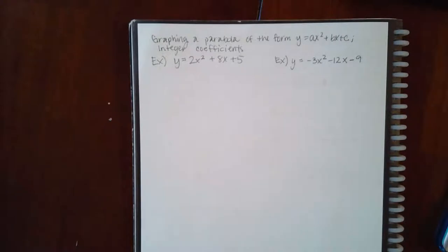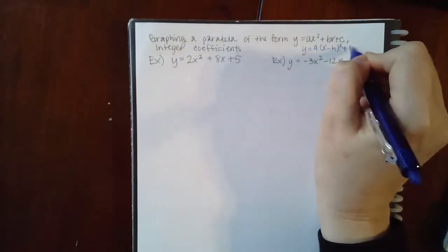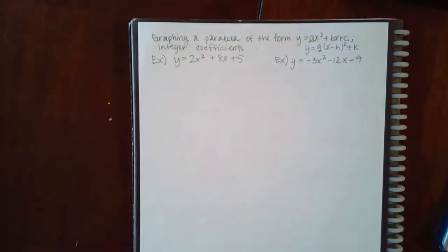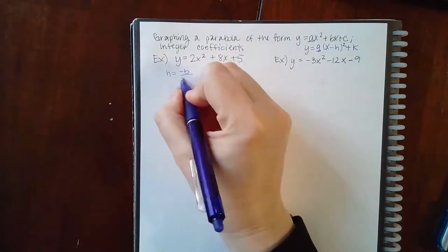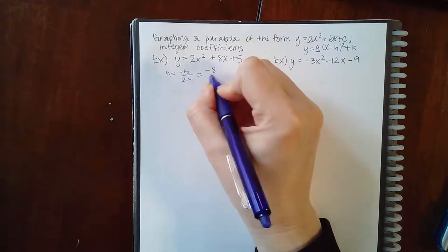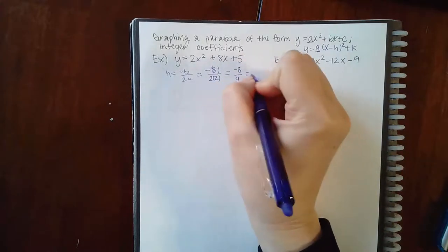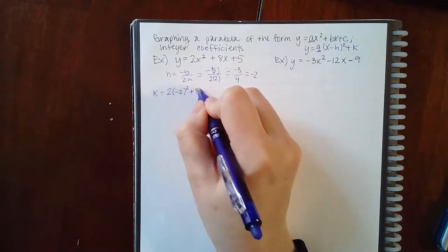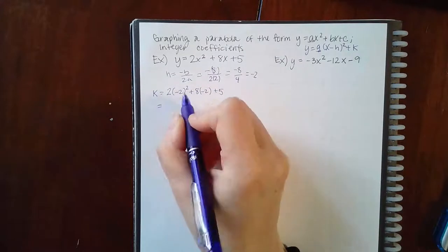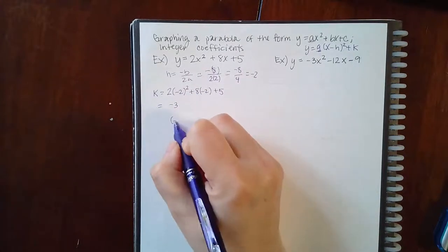For a problem with a = 2, graphing a parabola in the form 2x² + 8x + 5, find h = -b/2a = -8/(2·2) = -8/4 = -2. For k, plug -2 into the function: 2(4) + 8(-2) + 5 = 8 - 16 + 5 = -3. So the center is (-2, -3).